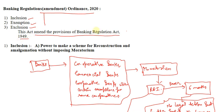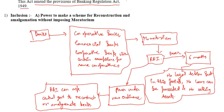First we are going to begin with the inclusion part. We're going to discuss the clauses that have been inserted under the new provision, under the new ordinance. First is power to make a scheme for reconstruction and amalgamation without imposing moratorium.